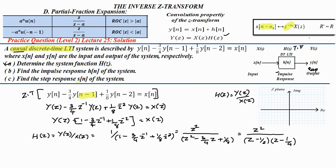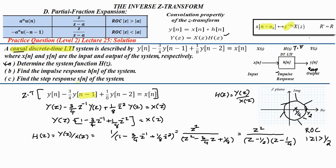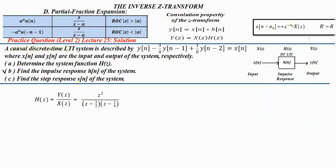We also need to find the ROC of the system. Since it is a causal discrete time LTI system, the ROC must be outside the outermost pole. The two poles are at 1/4 and 1/2, so the ROC is |z| greater than 1/2.